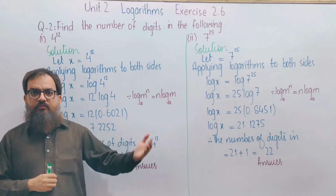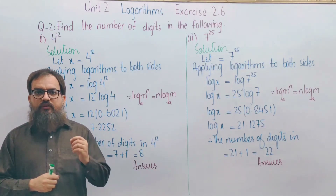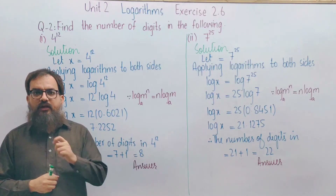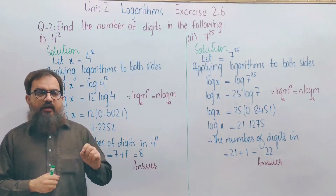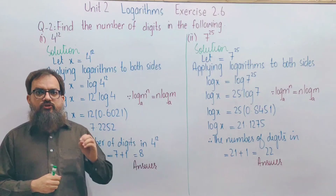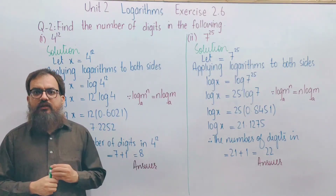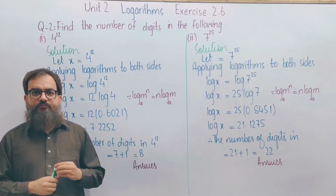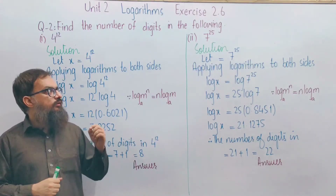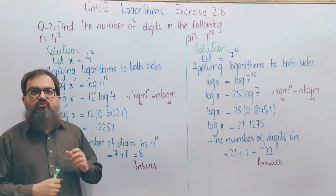Just as we understood Question 1, we will simplify this one in the same way. I told you the steps at the beginning of Part 1 — apply those same steps here. When I explain the last answer, I will also read out the question so you know what was being asked. Question 2, second part: we are given 7 to the power 25.